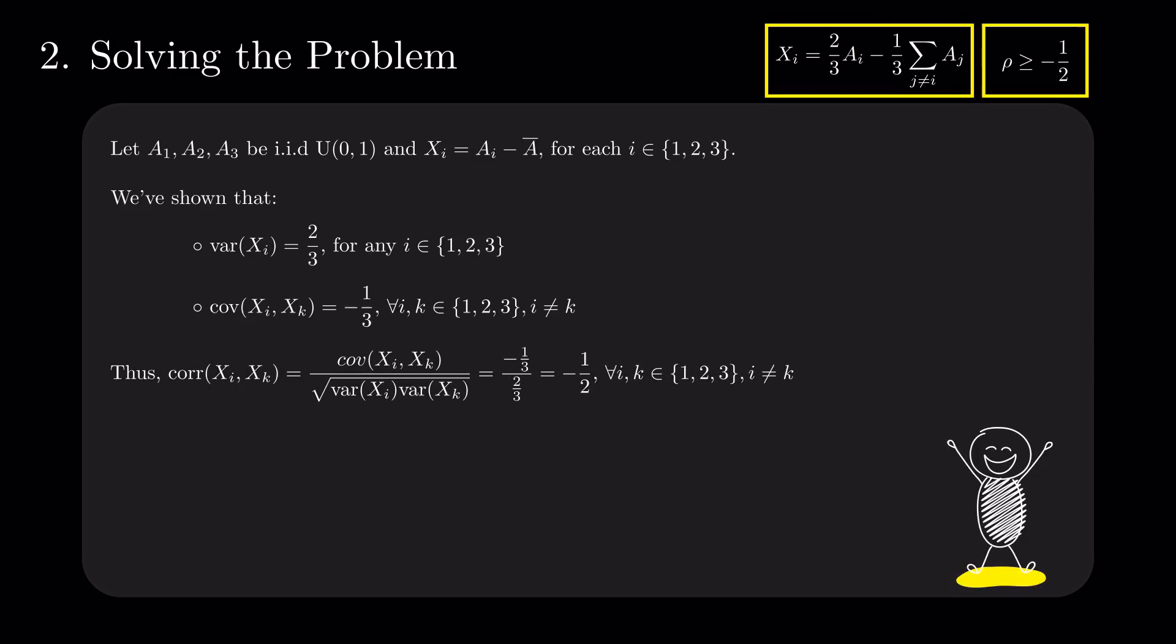This example implies that the value of minus 1 divided by 2 is attainable, hence, it is the minimum value that rho can take.